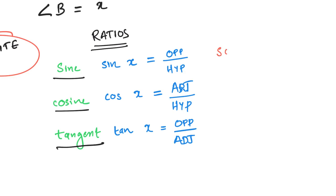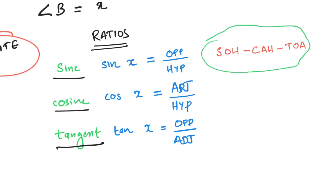Sin equals opposite by hypotenuse, cos equals adjacent by hypotenuse, tan equals opposite by adjacent. That's why it's called SOH-CAH-TOA. Please subscribe to Ajmal's Classroom for more videos. Thanks for watching!